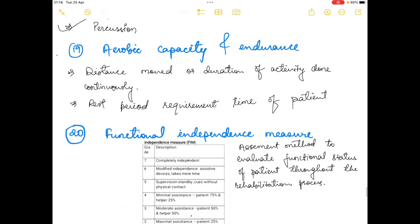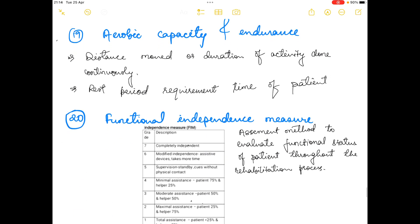The next thing is aerobic capacity and endurance. What is aerobic capacity and endurance? Basically, distance moved or duration of activity done continuously and the rest period requirement time of the patient. These are the two things you need to assess in patients suffering from any kind of neurological condition.